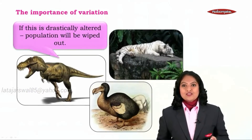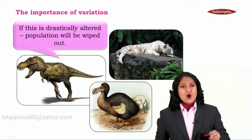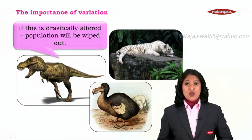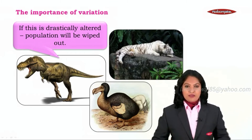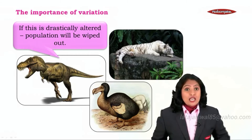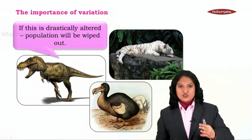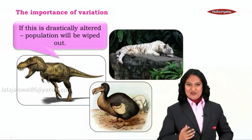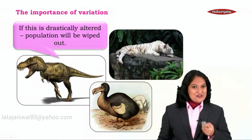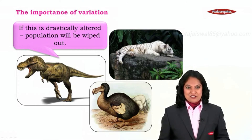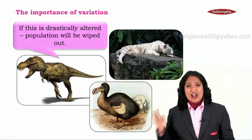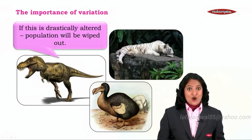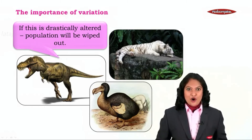This is very, very drastic. And if this is drastically altered, populations will be wiped out because if they are not able to adjust to these changes, they would lose their capacity to reproduce. If they lose their capacity to reproduce, no new organisms would be produced. That is why today we have some organisms which have become extinct from the face of earth, like dinosaurs and the bird called the dodo.